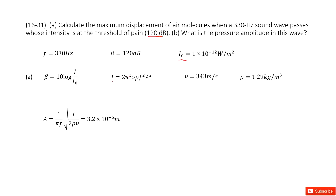Looking at the intensity-amplitude formula, 2π² is a constant. V is the wave speed, and rho is the air density. The frequency is given. So with all these quantities, we can get the amplitude by solving this equation.